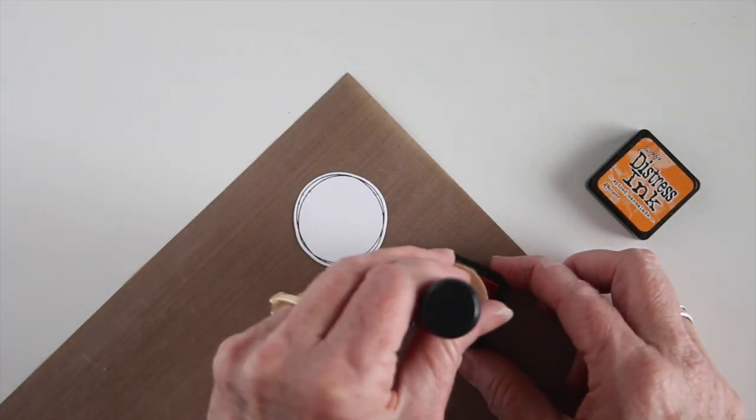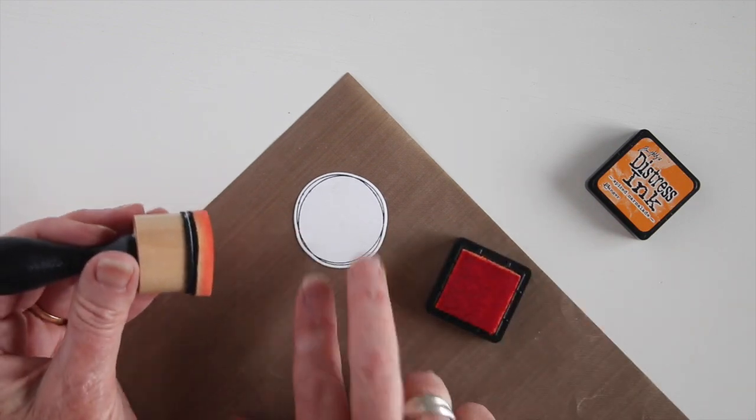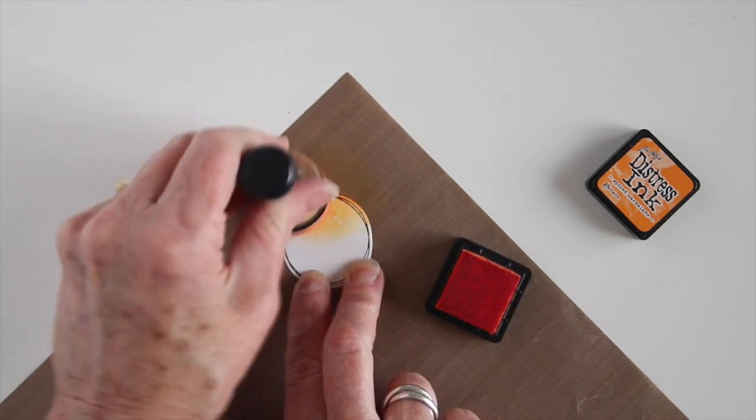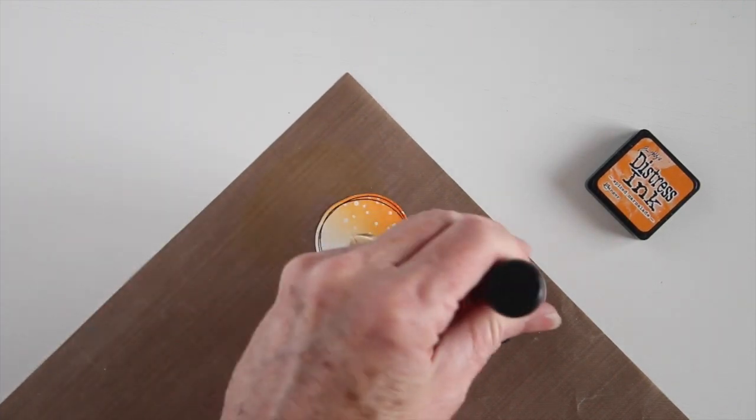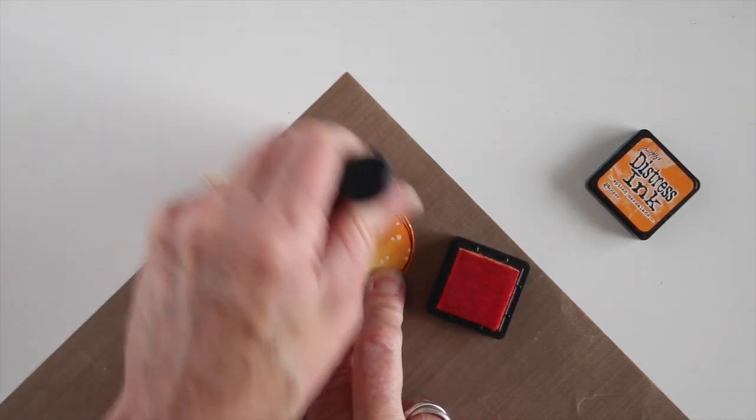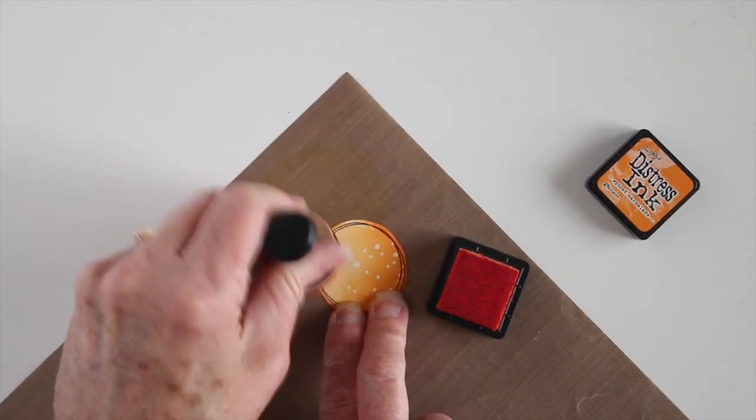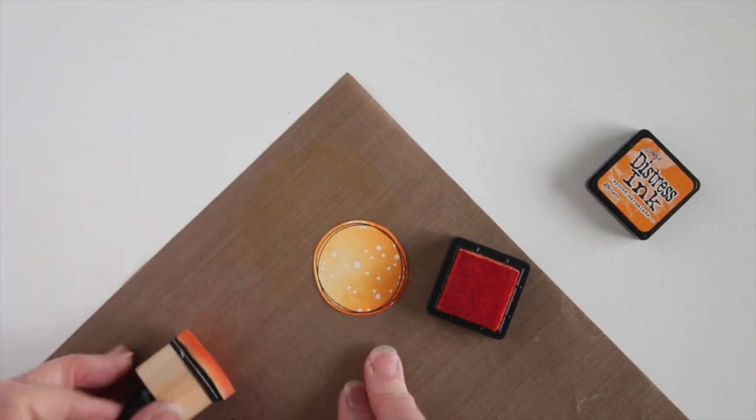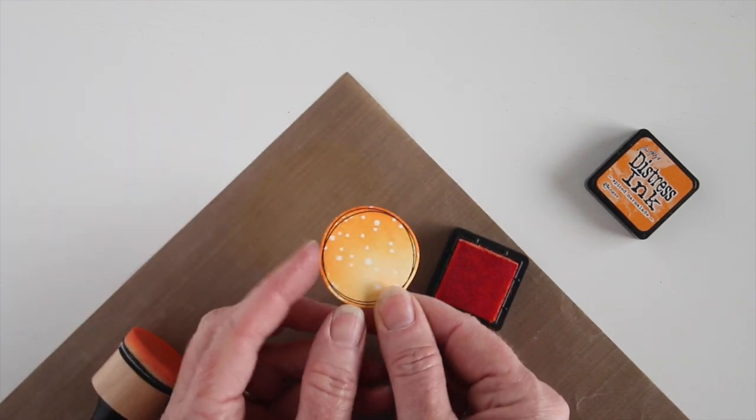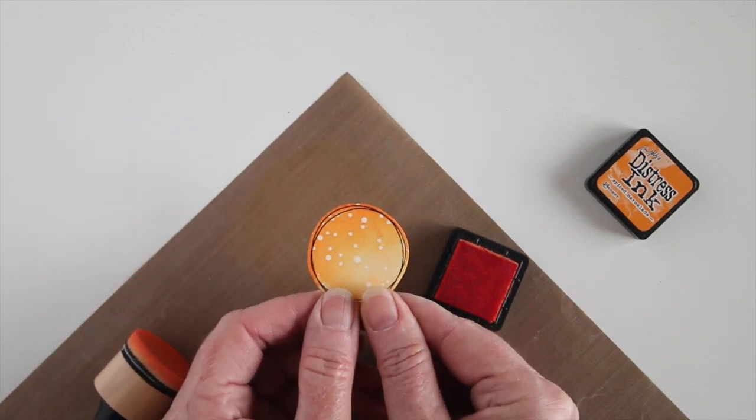To color this I'm using the Spiced Marmalade from the Tim Holtz Distress Ink Cube and also my blending tool. And I'm going over this and again you can quickly see how that resists that color. This has a nice finished look with the glossy shine from the embossing powder. Or you could iron this off between a piece of paper to clear off the embossing powder.